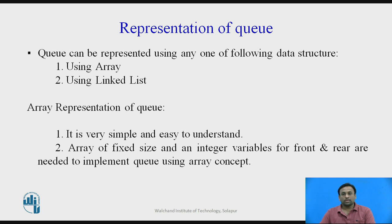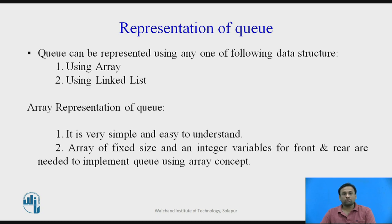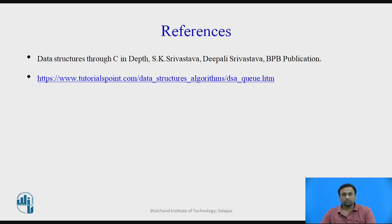A queue can be represented using one of the following data structures: using an array and using a linked list. In the next lecture we are going to see the implementation of a queue using an array, because it is very simple to use and easy to understand. An array of fixed size and integer variables front and rear are needed for the array implementation. For the linked list implementation we have to make use of pointers, which we will see later.